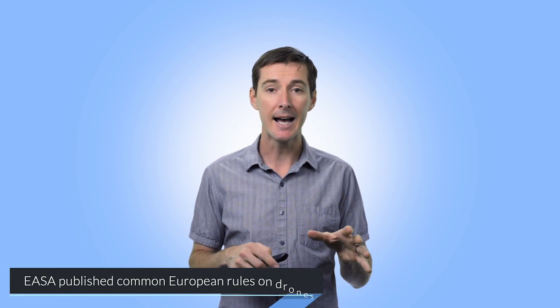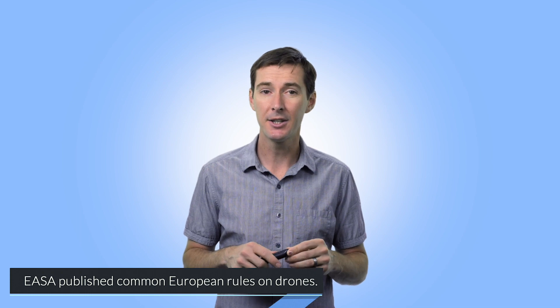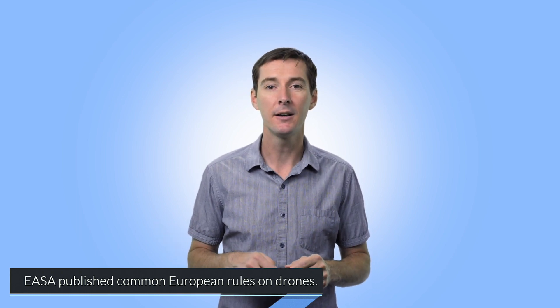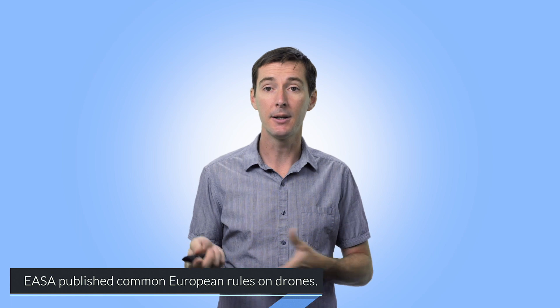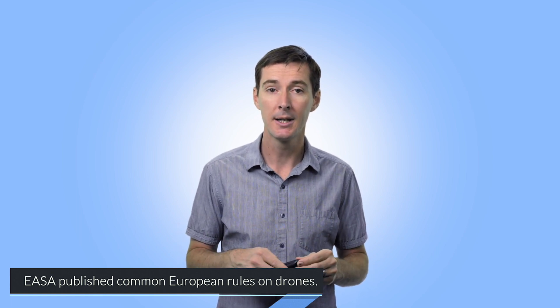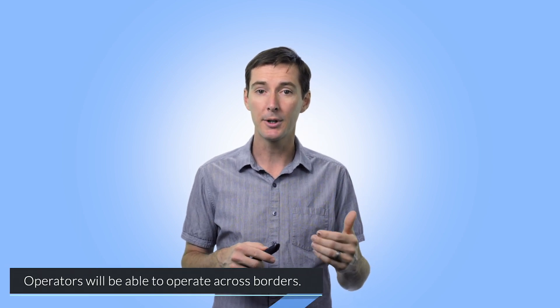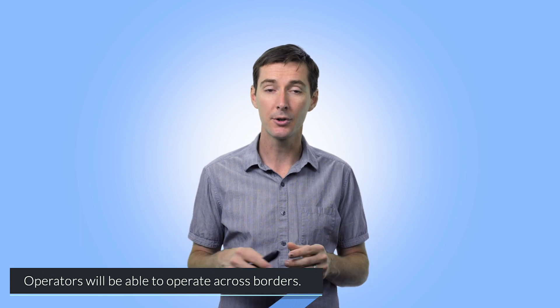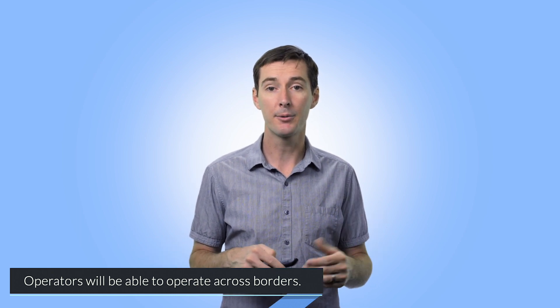The last thing is Europe establishing common drone rules across all countries. This came out on June 11th. The EASA, the European Union Aviation Safety Agency, basically the equivalent of the FAA, published a set of common rules applying to all countries. These rules will help drone operators have a clear understanding of what's allowed and what's not allowed, which is great. This will also allow drone operators to operate across all different countries once they receive authorization from their own country, which I think is a great decision.